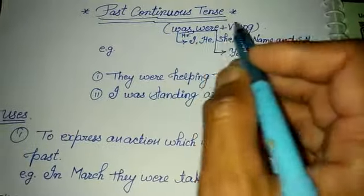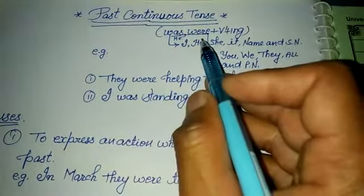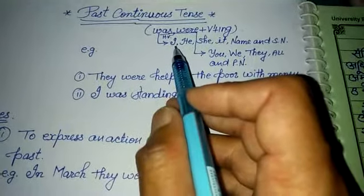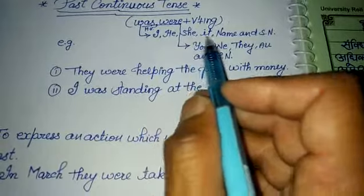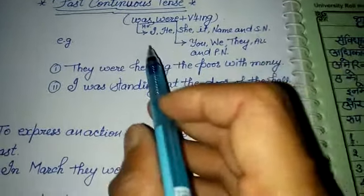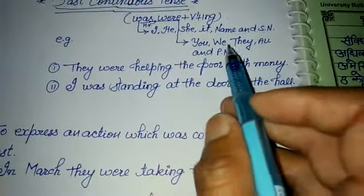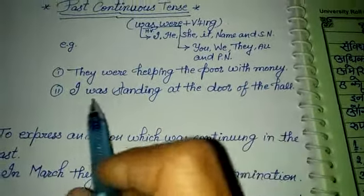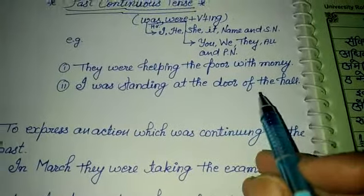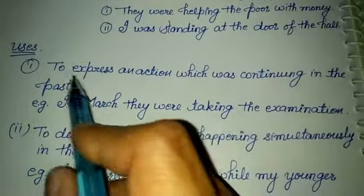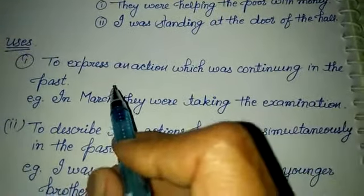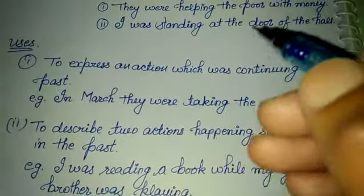Next is Past Continuous Tense. Its ID (structure) is: was/were + verb's first form + ing. 'Was' is used with I, she, he, and singular nouns. 'Were' is used with you, we, they, and plural nouns. The first use is to express an action which was continuing in the past.